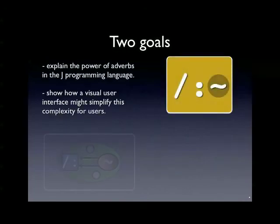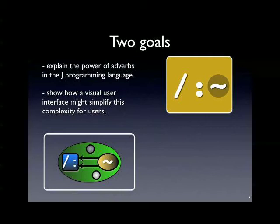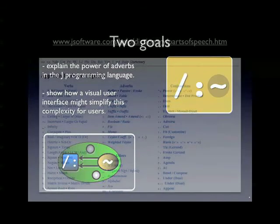Two goals for this: to explain the power of adverbs in the J programming language, and also to take a look at a visual interface that might make it a little easier to see what's going on. This is the normal text form of what you would see as an adverb. This is the adverb, and this turns out to be the verb. And here is the visual aspect that I'm thinking of putting together that makes it a little clearer about what's going on.